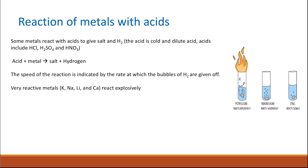The speed of the reaction is indicated by the rate at which hydrogen gas is produced — the number of bubbles gives an indication of the reaction rate. Very reactive metals at the top of the reactivity series, like potassium, sodium, lithium, and calcium, will react explosively and produce a lot of hydrogen.